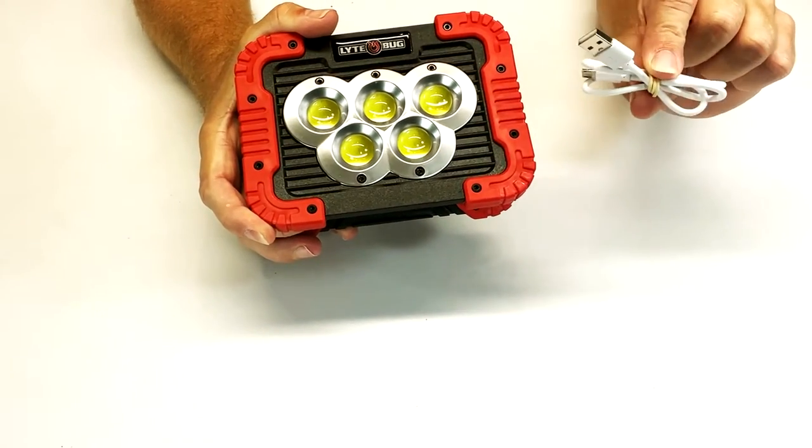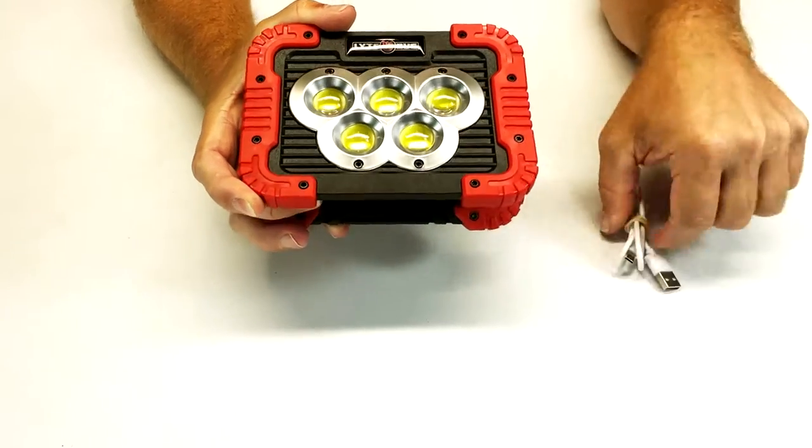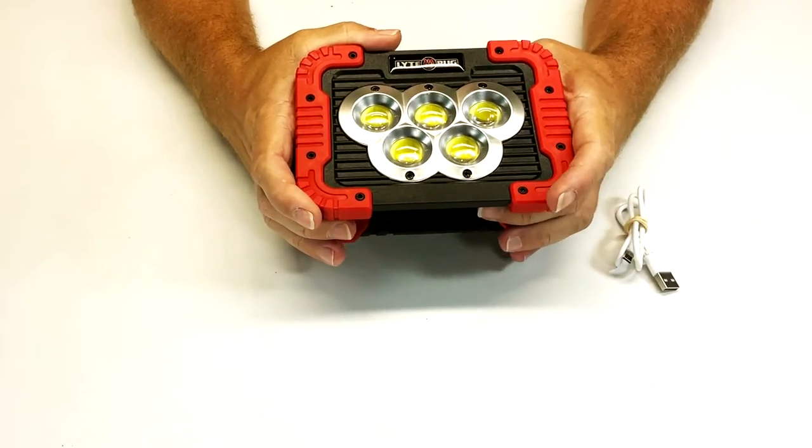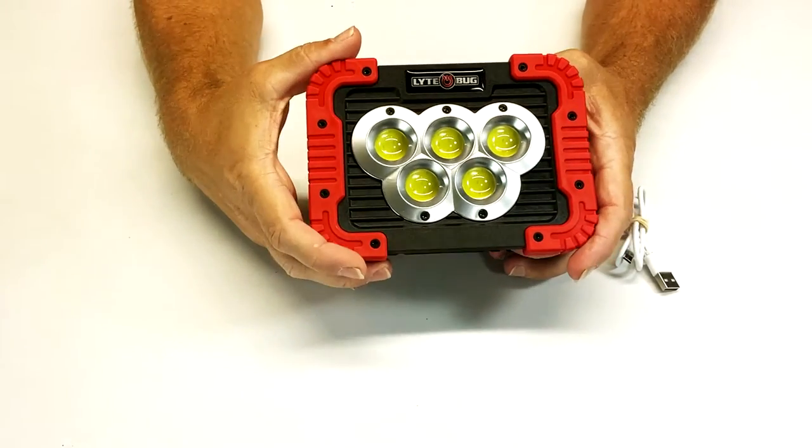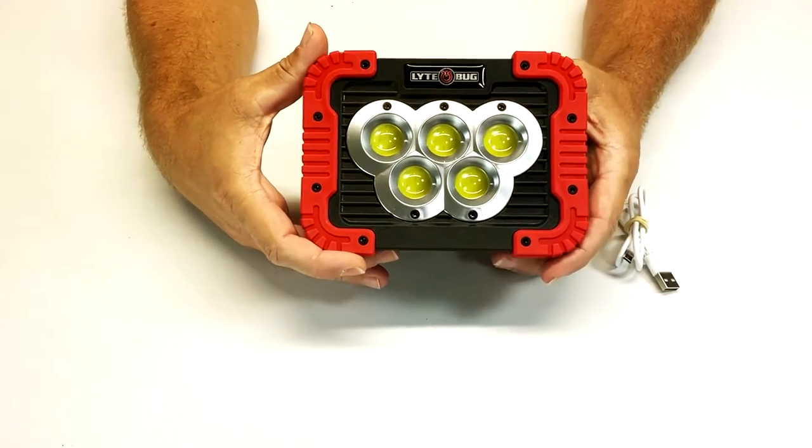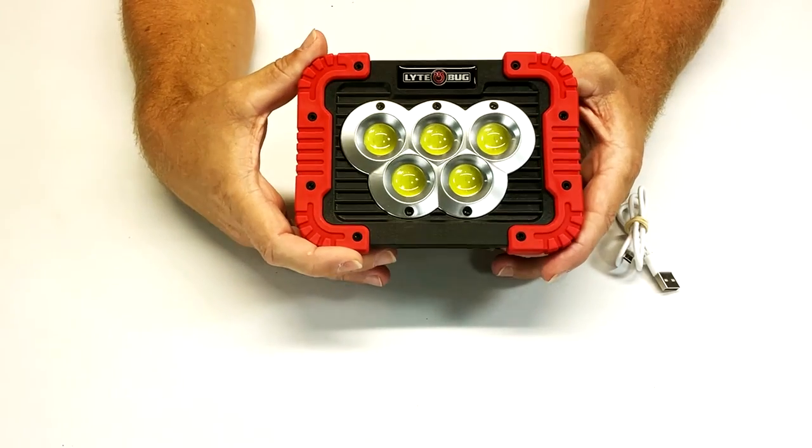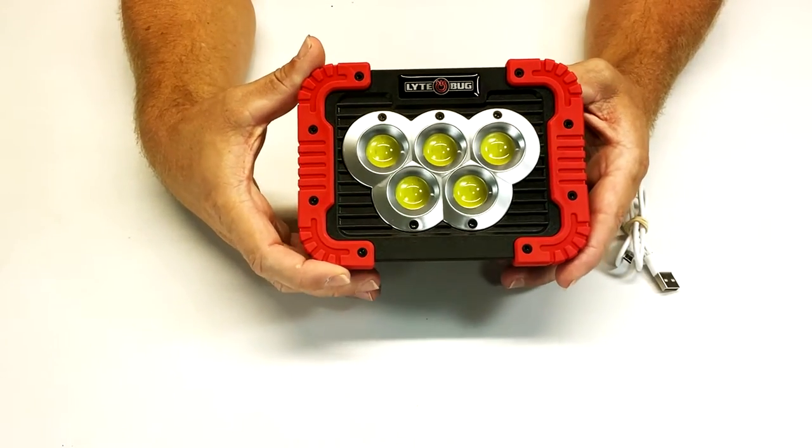It does come with a charging cord for charging the device. And it also has five different LED lights that are pretty bright. It has three different modes. You have a high beam, you have a low beam, and a strobe.